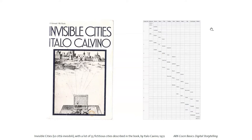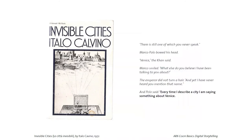There's a table from Wikipedia listing all the cities, their characteristics, where they appear in the book, and their names. An interesting quote from the book: Kublai Khan says, 'There is still one city of which you never speak.'